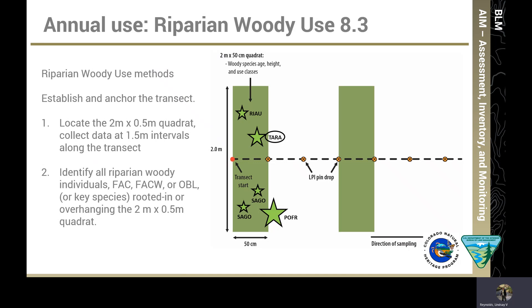The quadrat is 1 meter on either side of the transect — 2 meters wide and 50 centimeters along the transect, shown here by the green shaded rectangle. Inside each quadrat, identify all riparian woody individuals: any species that are FAC, FAC wet, or obligate wetland species, or those on your project lead's key riparian species list. Identify all individuals rooted in or overhanging the quadrat. In the illustrated example, we have a Ribes aureum, a dead tamarisk, two Salix goodingii, and one Populus fremontii that is rooted outside the plot but overhanging the quadrat — so we will measure riparian woody use on all of those.